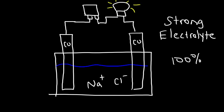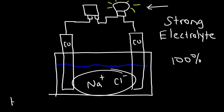Weak electrolytes only partially conduct electricity — the light bulb will be very dim. For example, if you dissolve a weak acid like acetic acid, which is found in vinegar, it ionizes only a little — maybe about 1%. So the light bulb is going to light up a little but it's going to be very dim, and that is a good indication that you have a weak electrolyte in the solution.